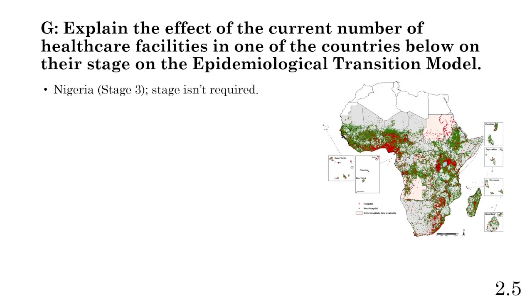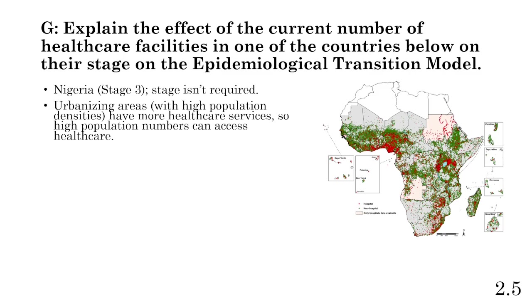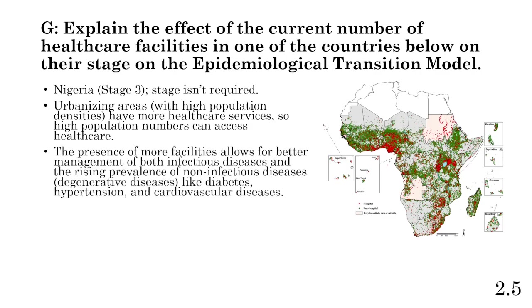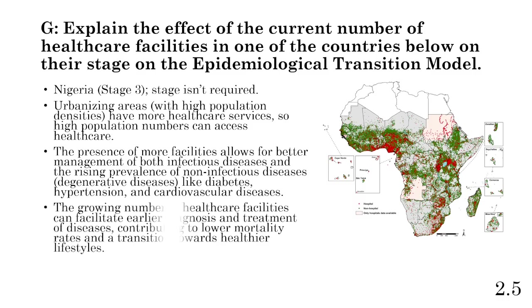Nigeria is in stage three. In urbanizing Nigeria, high population densities mean more healthcare services are accessible. The presence of more facilities allows for better management of infectious diseases, as well as the rising prevalence of non-infectious diseases — also called chronic or degenerative diseases — such as diabetes, hypertension, cardiovascular diseases, cancer, lung disease, kidney disease, and substance abuse. The growing number of healthcare facilities facilitates earlier diagnoses and treatment, contributing to lower mortality rates and a transition toward healthier lifestyles.